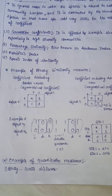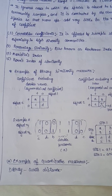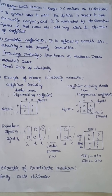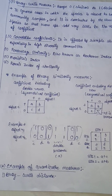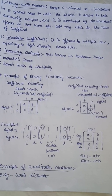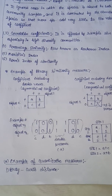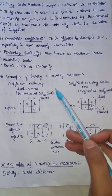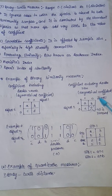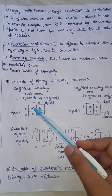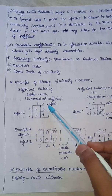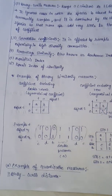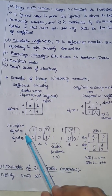The Bray-Curtis measure — originally called the percentage difference method — was described by Odum in 1951. For each species, we compare the similarity between two sites using a specific formula. There are two conditions: a symmetrical coefficient in which 'd' is included, and an asymmetrical coefficient in which 'd' is removed.